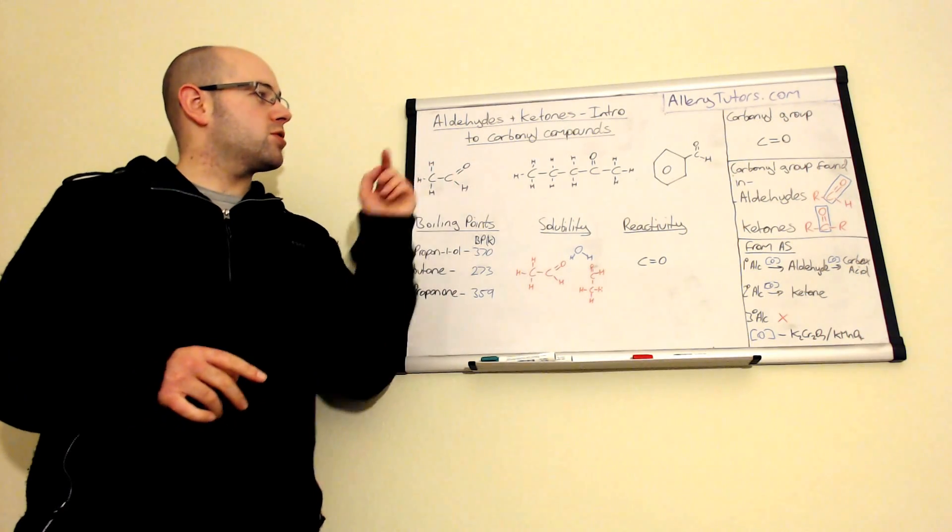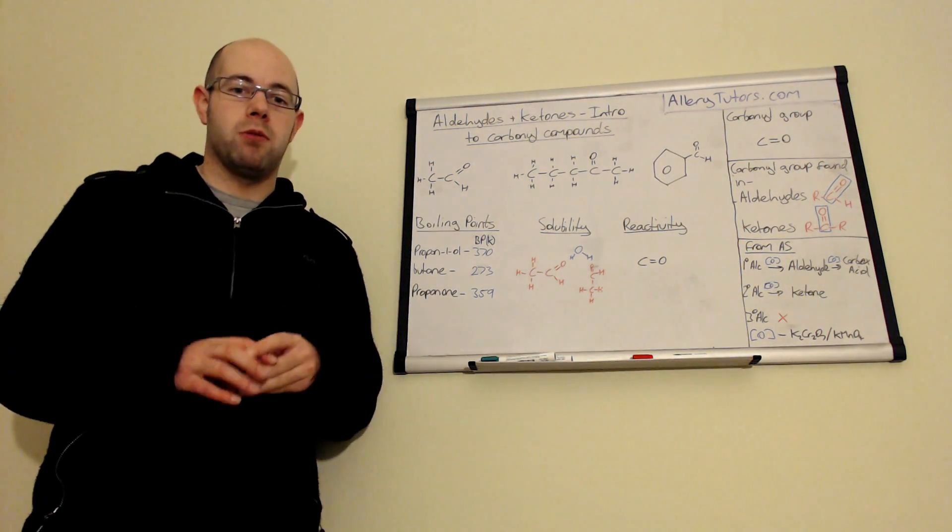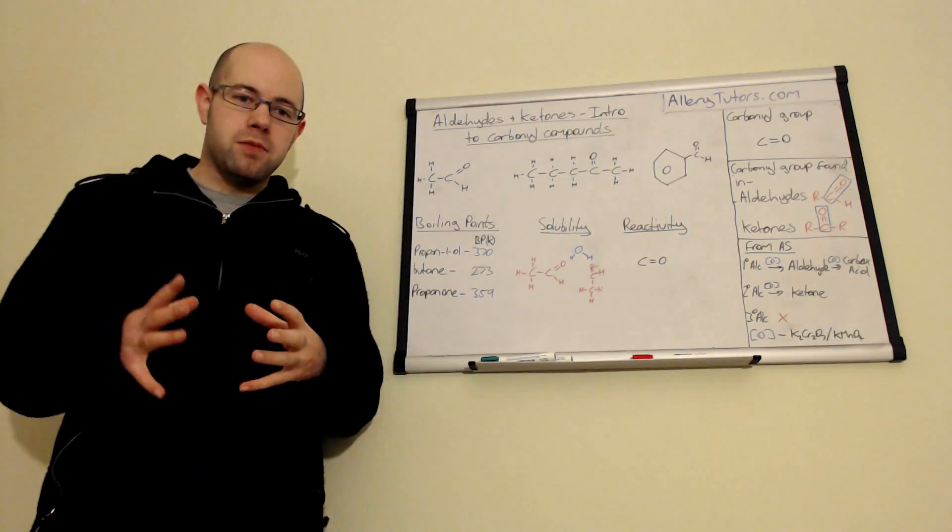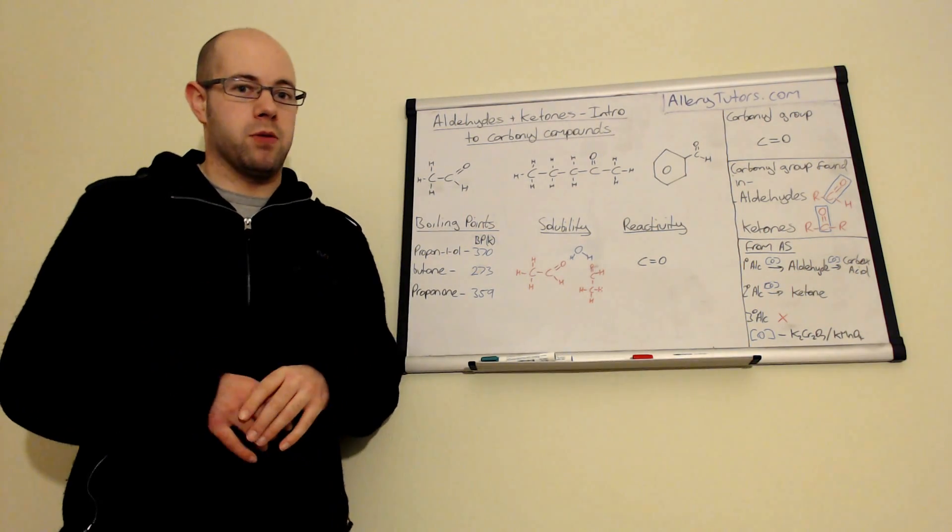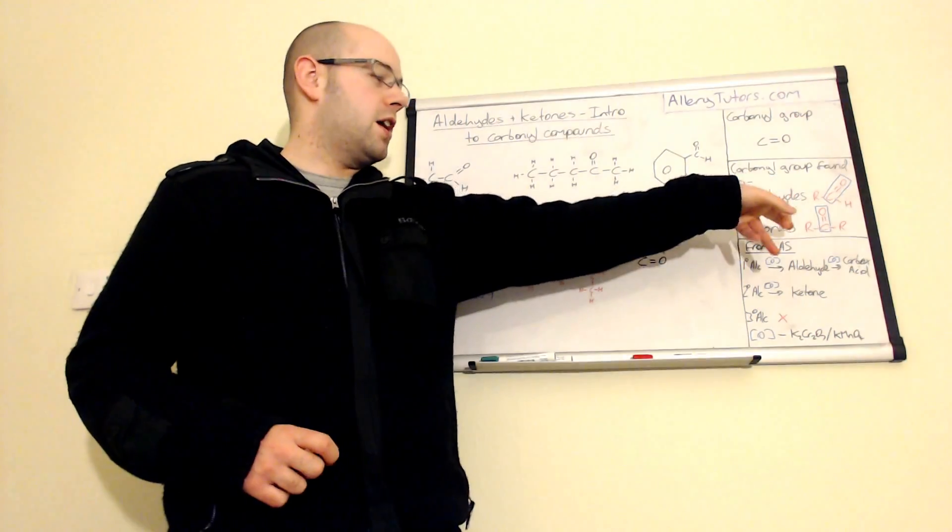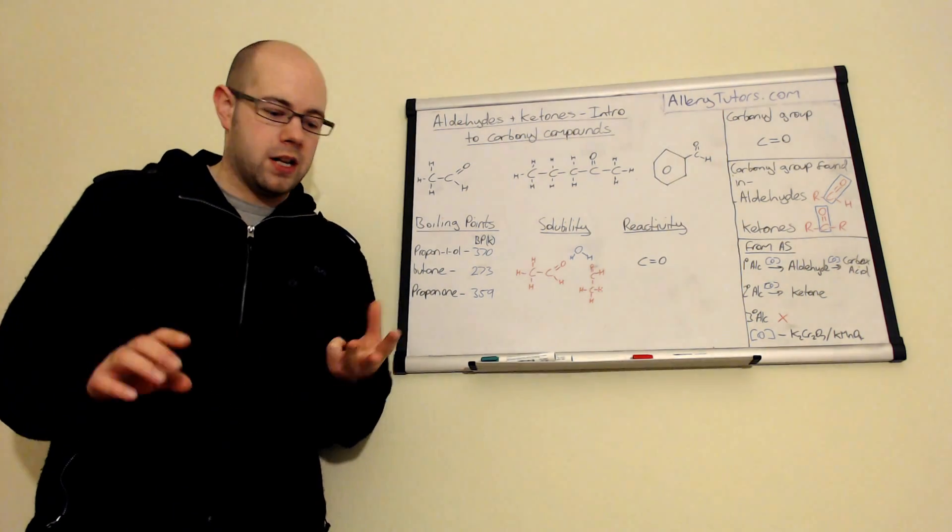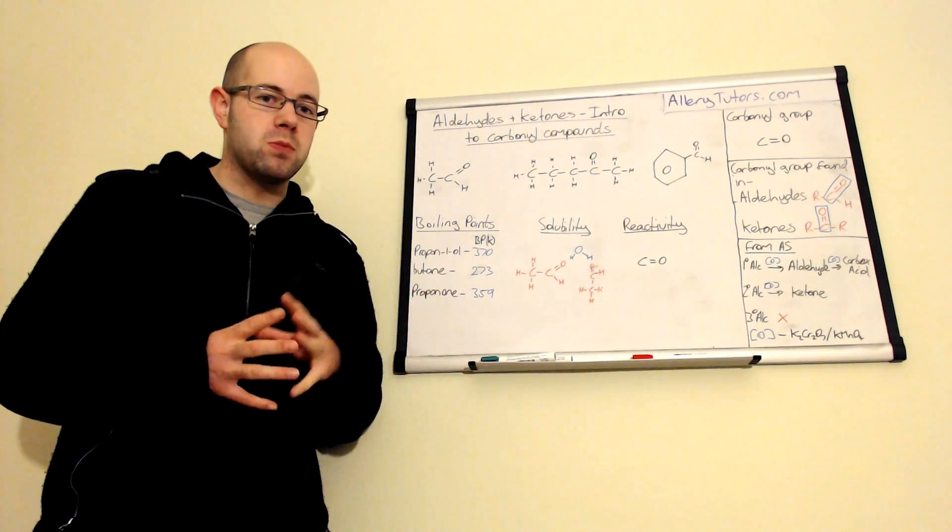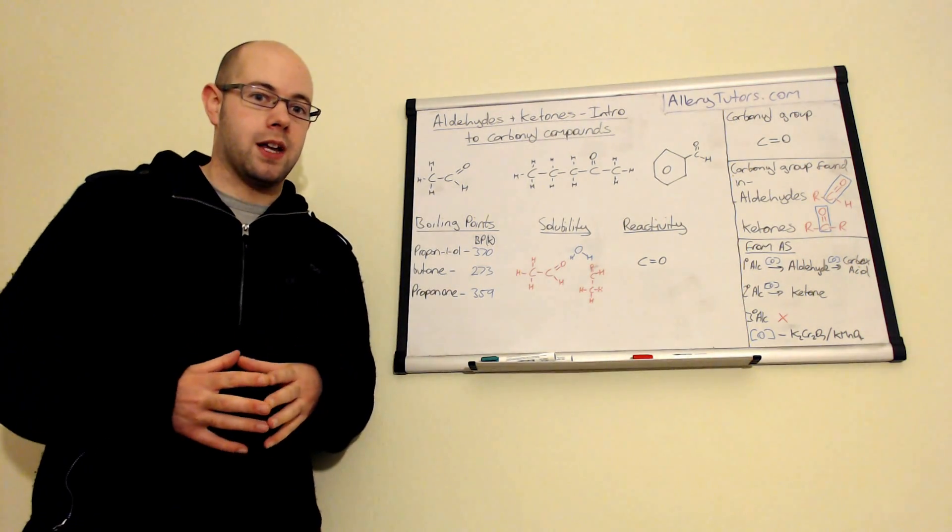We're going to start with what the carbonyl group is. The carbonyl group is basically carbon with a double bond oxygen onto it. There's a lot of molecules in organic chemistry that actually have the carbonyl group, for example aldehydes and ketones, you can also have esters, acid chlorides, acid anhydrides, carboxylic acids. So it will play a large part in organic chemistry.